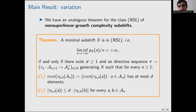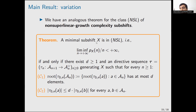The second main result is a variation for the non-superlinear growth complexity class. A minimal subshift has non-superlinear growth complexity if and only if it admits an S-adic structure of the same type, with the only difference being that condition C3 is absent. This is related to the liminf in the definition — we have control only over an infinite subset of natural numbers, not all of them.